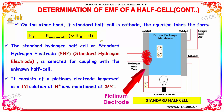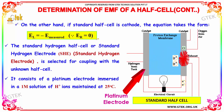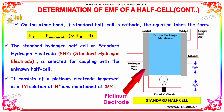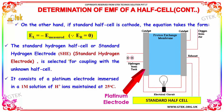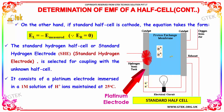The standard hydrogen half cell, also called the standard hydrogen electrode (SHE), is selected for coupling with the unknown half cell. It consists of a platinum electrode immersed in a 1M solution of H⁺ ions maintained at 25 degrees Celsius.